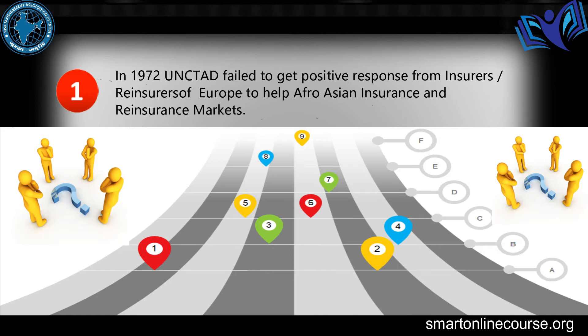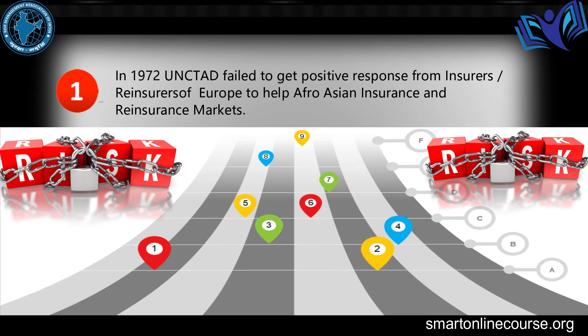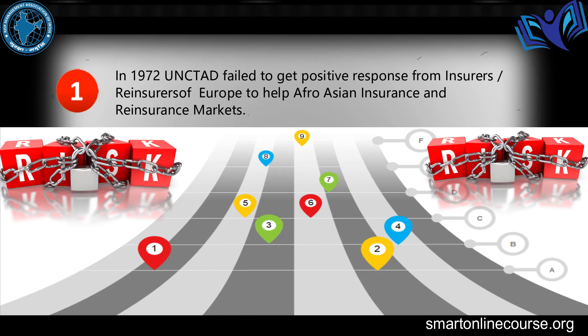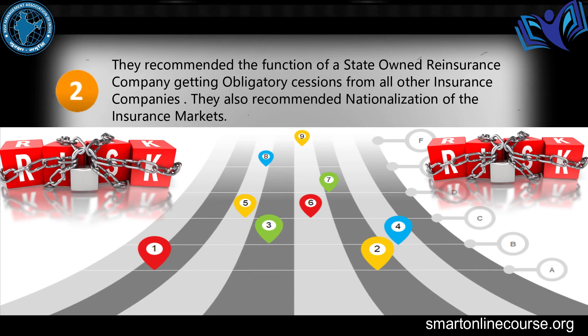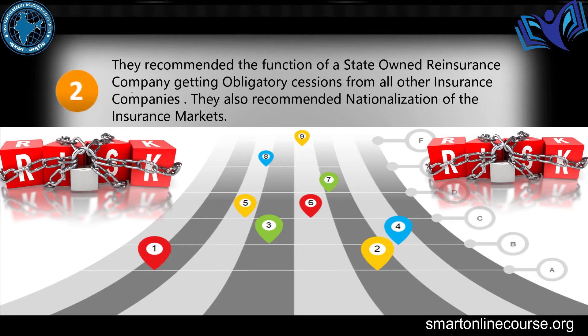So UNCTAD gave, in 1972, a call for altruism — meaning the Western European powers who had benefited from these colonies for hundreds of years should transfer technology and develop the insurance and reinsurance industry in the erstwhile colonies. But this call was not responded to positively by any of the reinsurers in Europe and the US. Therefore, they recommended creation of a state-owned or national reinsurance company, which would receive a compulsory 20–25% of all direct insurance companies' business.